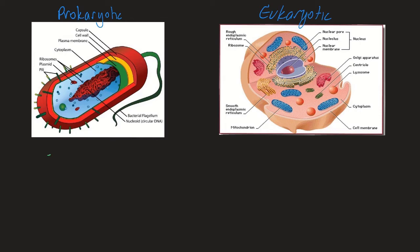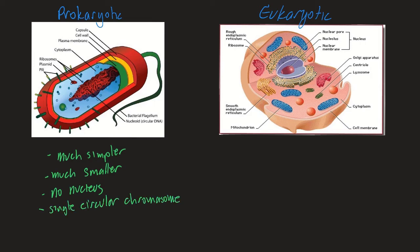Prokaryotic cells are much simpler and much smaller — they were the first cells. They do not contain a nucleus. You can see in the diagram that whilst there's no nucleus, there is nuclear material: DNA in the form of a single circular chromosome. There are also no membrane-bound organelles.